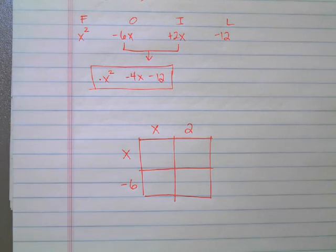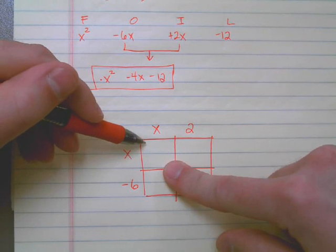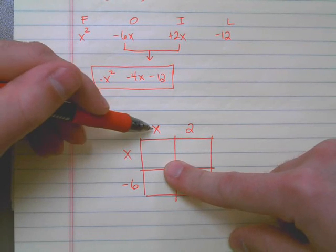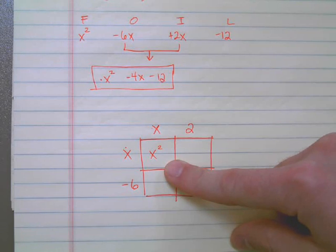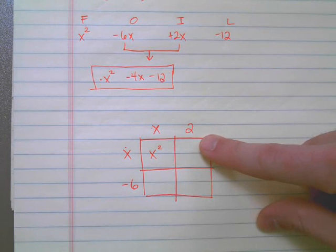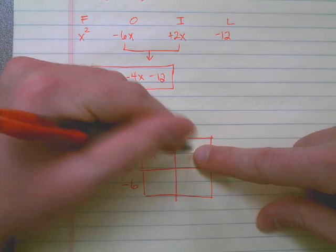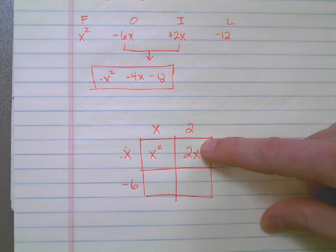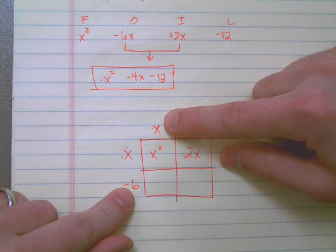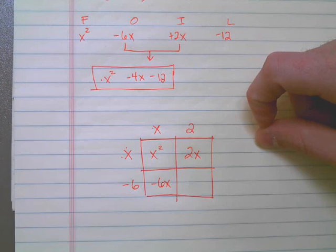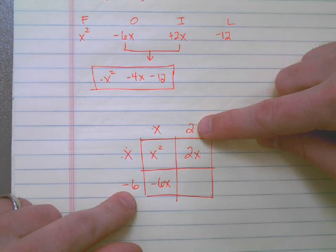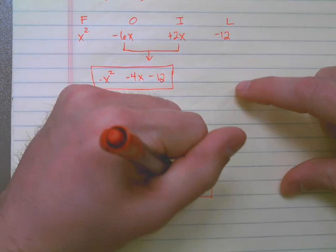Now, all I have to do is, whenever I'm working in this box, I need to take the two terms that connect here. So x and x combine, they multiply to get x². x times 2x, these two combine at this spot, that would be 2x. x times -6 gives me -6x, and -6 times 2 gives me -12.